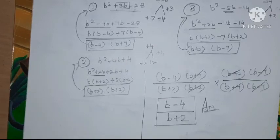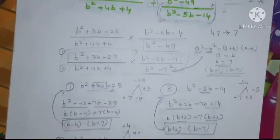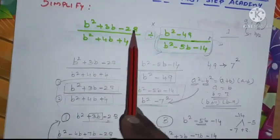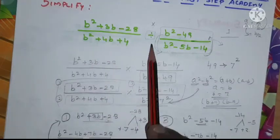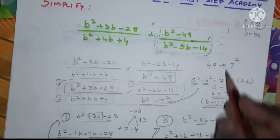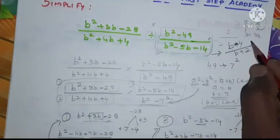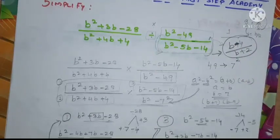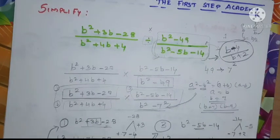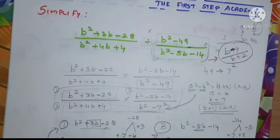Hope you understand how we found the answer for this problem. The problem was: simplify b squared plus 3b minus 28 divided by b squared plus 4b plus 4, divided by b squared minus 49 divided by b squared minus 5b minus 14. The answer is b minus 4 divided by b plus 2. Thank you very much — this is First Step Academy, learn and grow educational video.